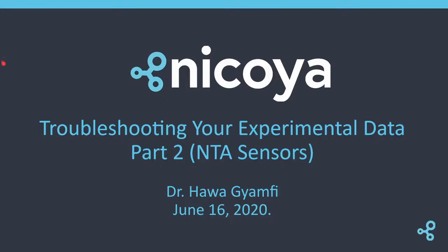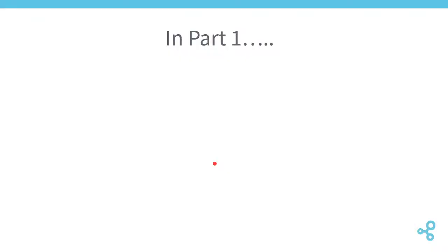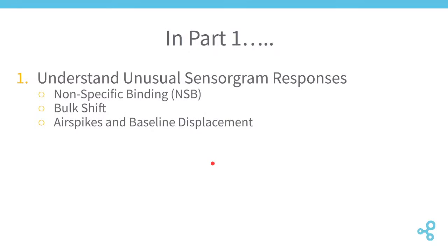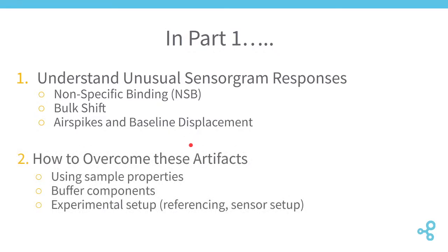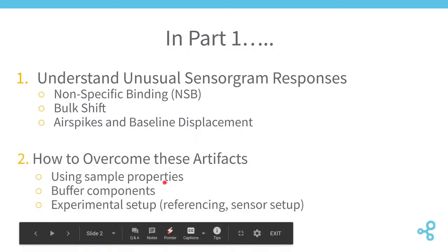My topic for discussion today is troubleshooting your experimental data with a focus on the NTA sensor. Previously in webinar number 4, we discussed how to understand unusual sensorgrams under four different artifacts: non-specific binding, bulk shift, and air spikes. After identifying these artifacts, we discussed how to overcome them using sample properties, buffer components, and the experimental setup itself — including referencing and maintenance tips.